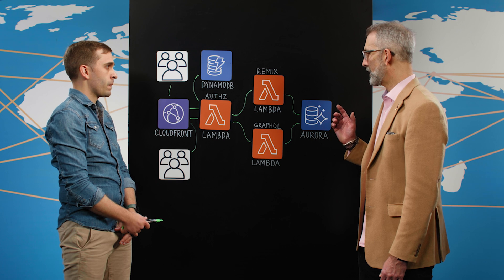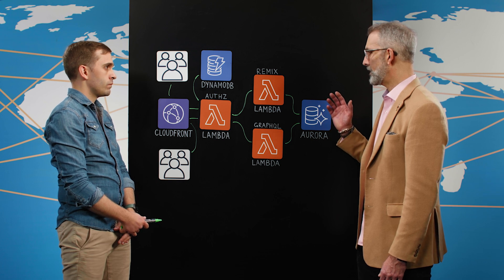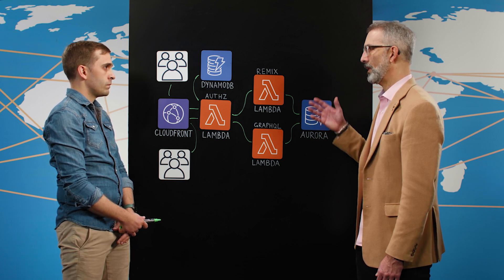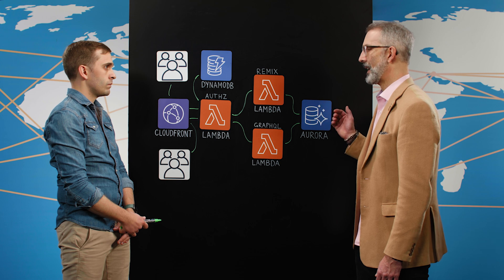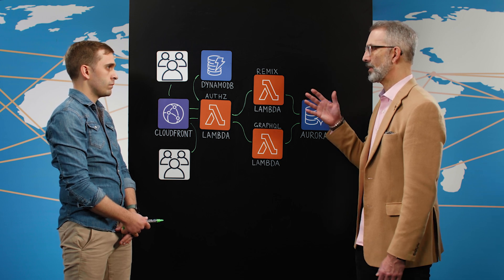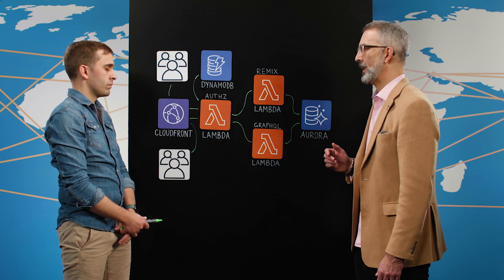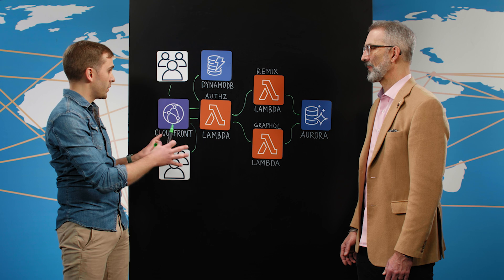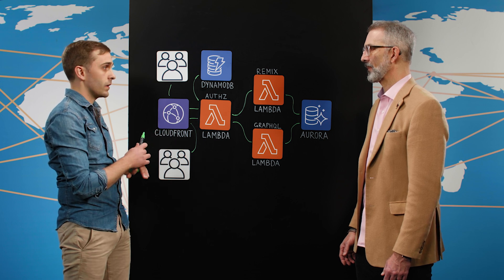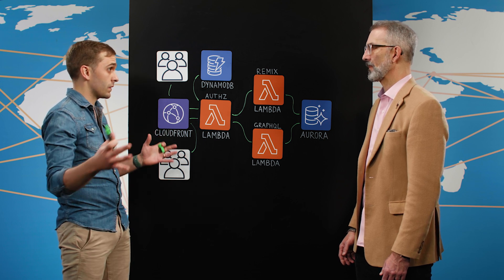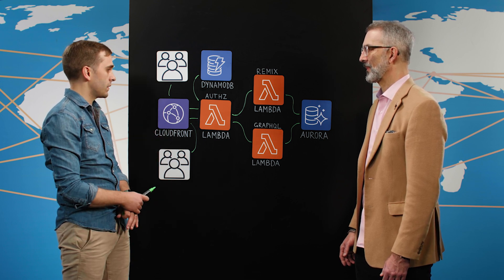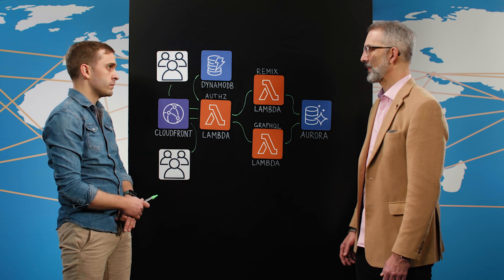That's a really cool architecture where you're using two different ways to access the same data to serve different user bases. That's right, and it's completely serverless so we can serve our users across the globe — 3M is a global company, so that's incredibly important for us. Well, thank you for sharing your architecture with us today. Absolutely. And thank you for watching This is My Architecture.